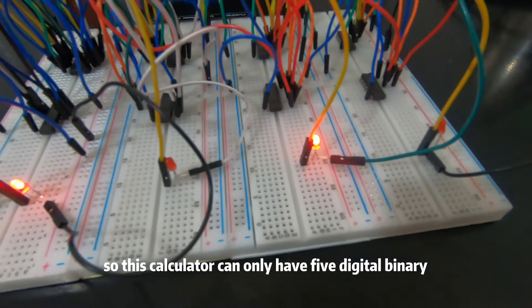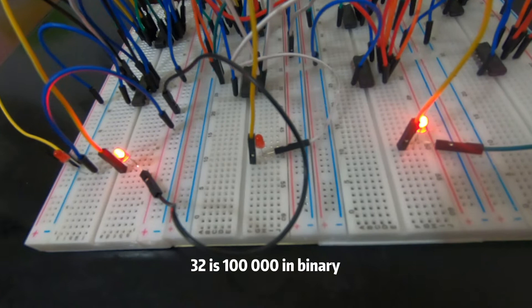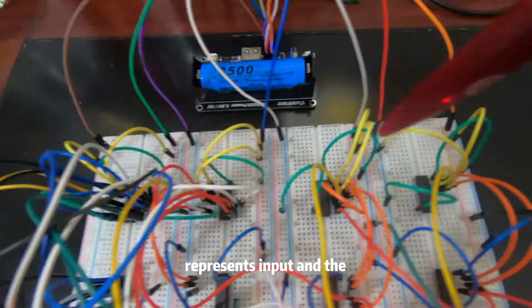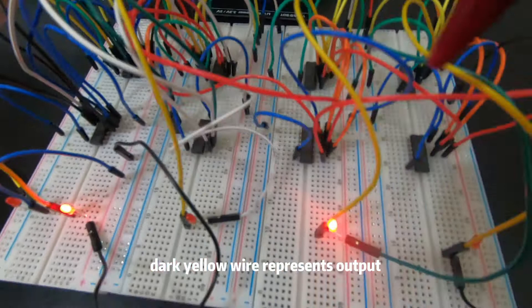However, 32 is 100000 in binary, which means I can't display outputs beyond 31. The light yellow wires represent input and the dark yellow wires represent output.